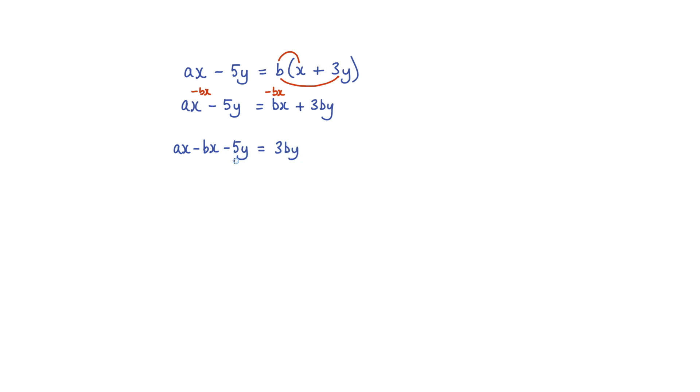I can now eliminate this minus 5y. To do that, I would have to add 5y to the left. And if I add 5y to the left, I must also add 5y to the right. So what I'm left with is ax minus bx. The 5y's have cancelled, equals 3by plus 5y.